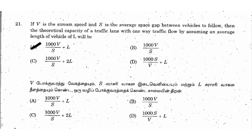In this video, we will discuss the question about TNPCAE 2015. If V is the stream speed and S is the average space gap between vehicles to follow, then the theoretical capacity of a traffic lane with one-way traffic flow, by assuming an average length of vehicle L, will be?